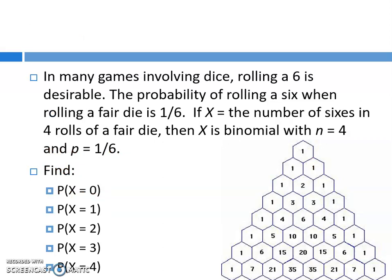Now let's talk about calculating binomial probabilities. I'll show you the long way first, then the calculator way which will make it a lot simpler. In many games involving dice, rolling a 6 is desirable. The probability of rolling a 6 on a fair die is 1/6. If x equals the number of 6s in 4 rolls of a fair die, then x is binomial with n = 4 and p = 1/6. What's the chance you get no 6s? You have a 1/6 chance of success and a 5/6 chance of failure, so it's (5/6) to the fourth power, which gives 0.48225.